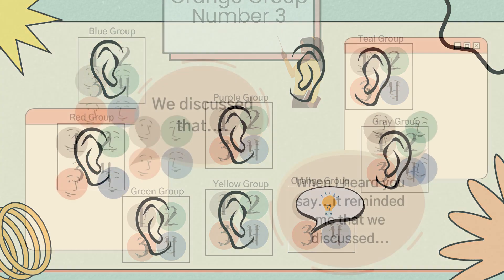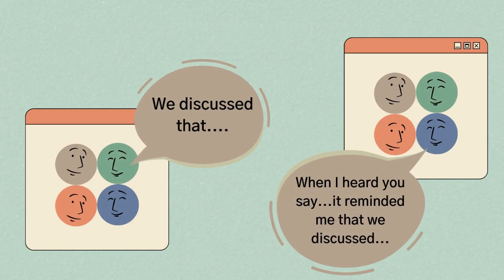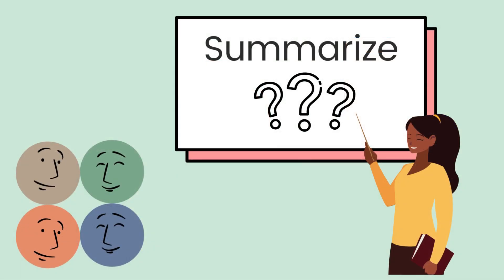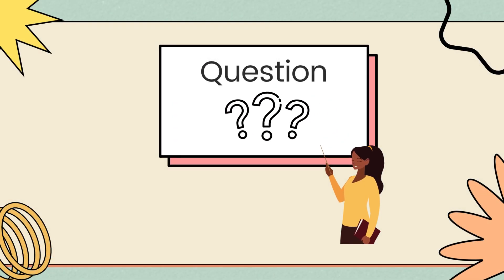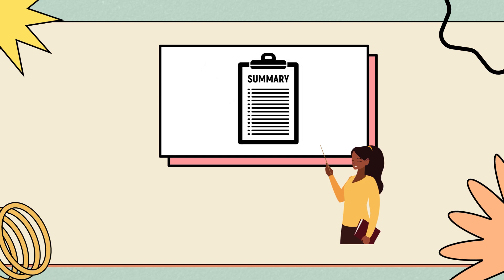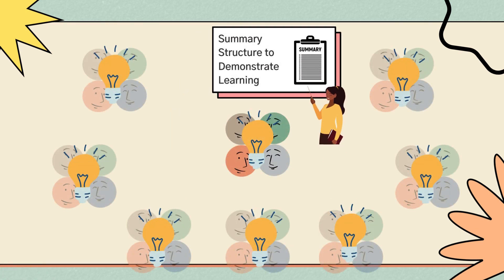Each group must begin by acknowledging what the previous group said, followed by their group's ideas. Once every group has shared, the first group summarizes the entire conversation. The teacher can then pose another question and the process repeats. At the end, the teacher provides a synthesis or summary structure for students to process and demonstrate their learning.